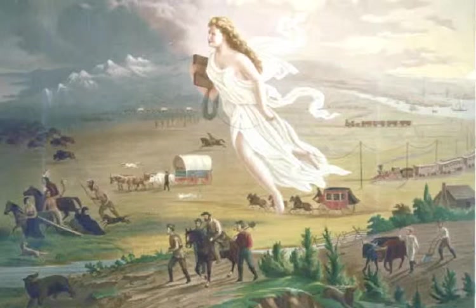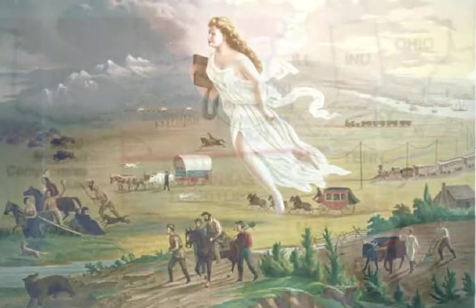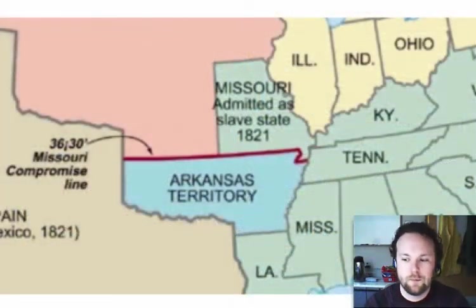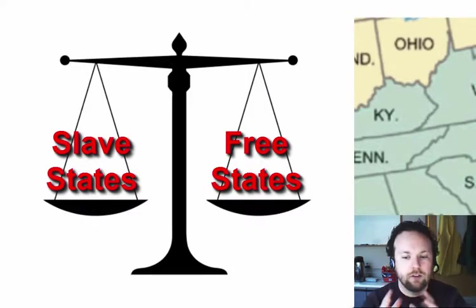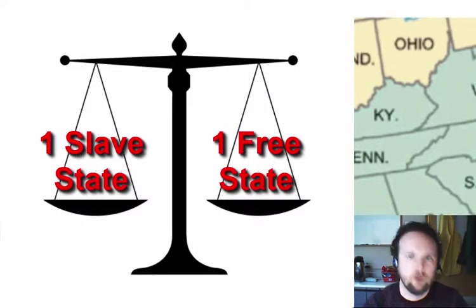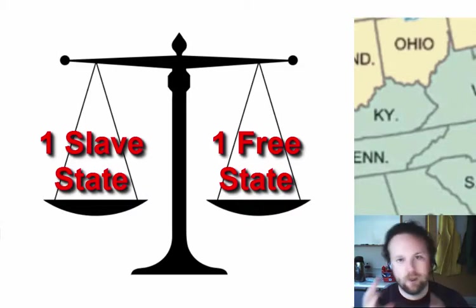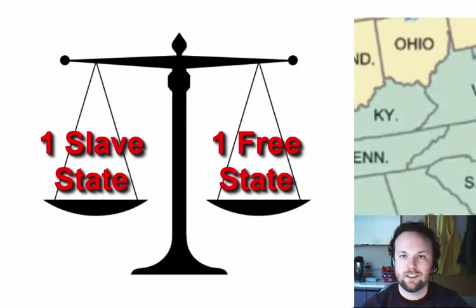All of these territories that we are now claiming, winning, or purchasing will eventually become states. So what about these new states when they want to be admitted to the union? In order to keep a balance in the Senate, states must be admitted in twos — one slave, one free. Our first video will give us a backdrop of what was going on in the 1840s and 1850s and provide a brief overview of what we'll be discussing today.